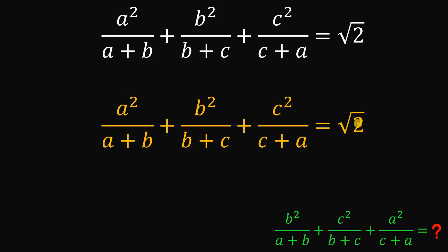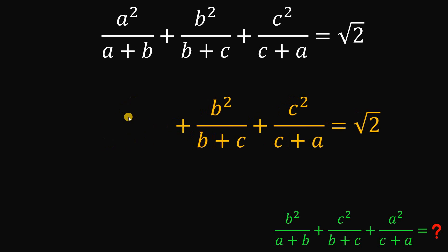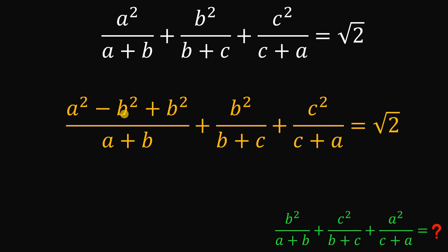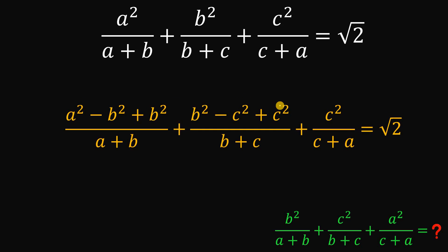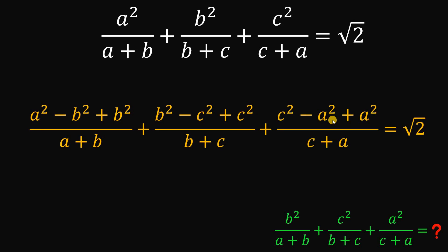The trick here is to add 0. We will add 0 to the numerators a squared, b squared, and c squared, where that 0 is in the form of negative b squared plus b squared. Similarly, in b squared we add negative c squared plus c squared, and on c squared we add negative a squared plus a squared.